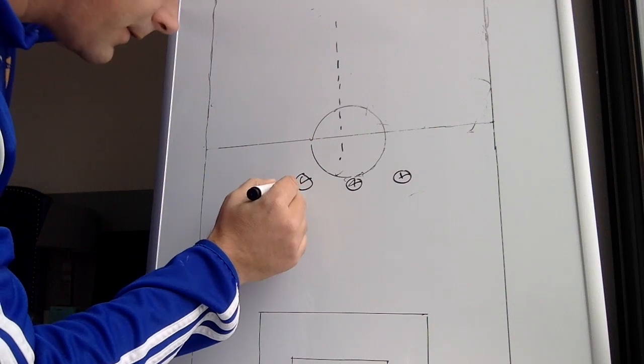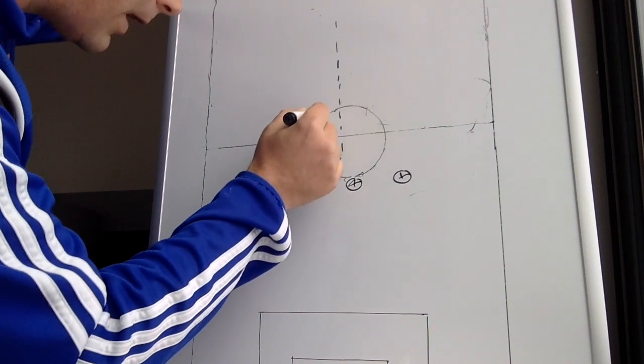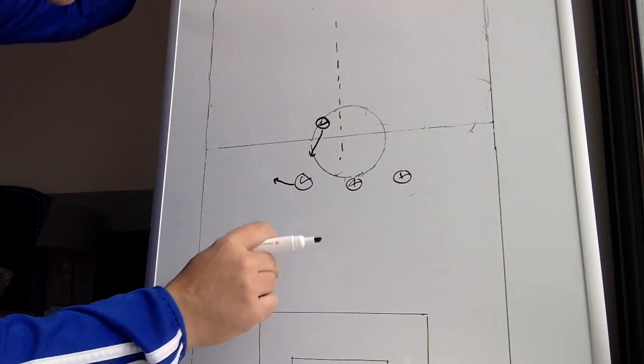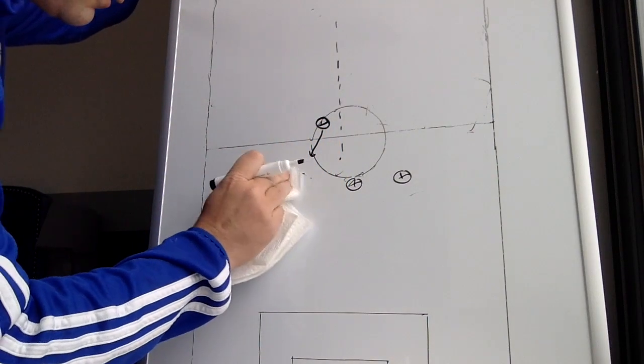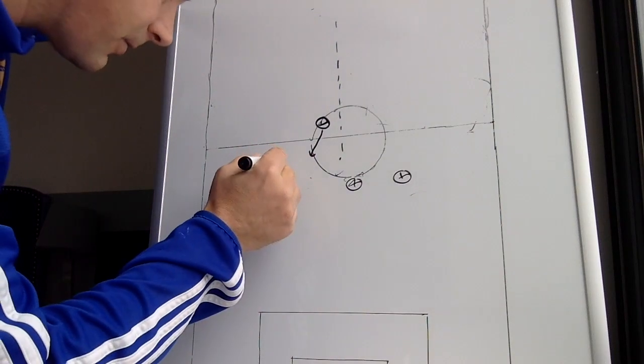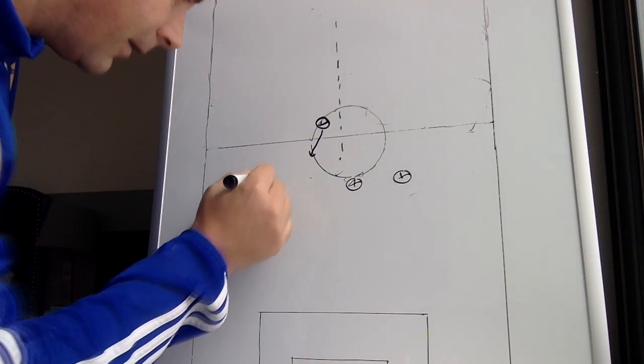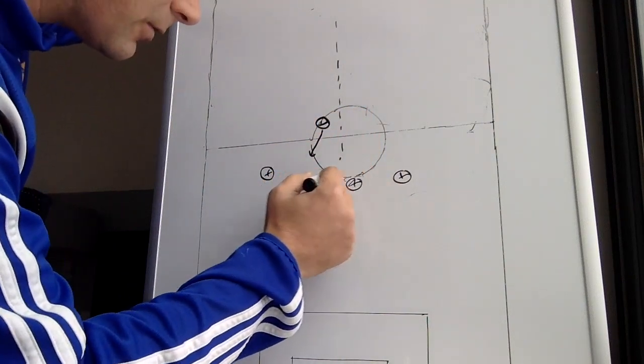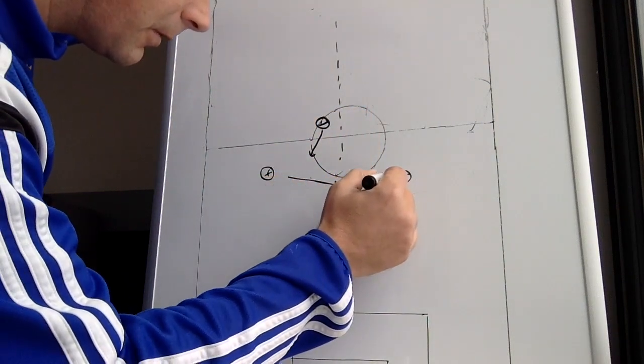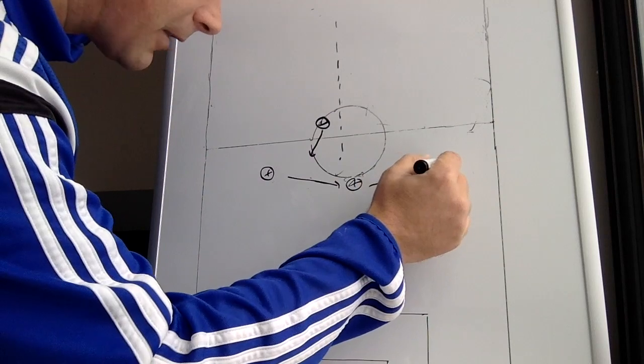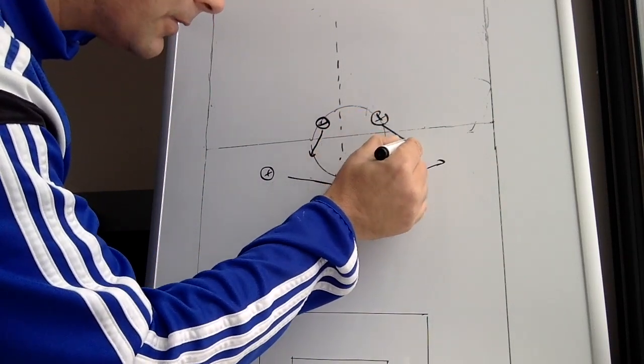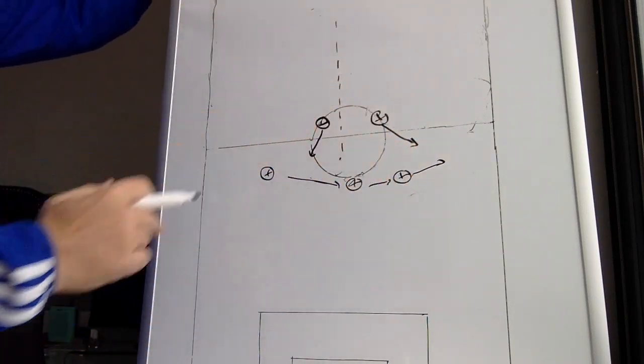So if this center back stretches a little wider, I like to have one of my defensive center mids, say that's my number six, come in there because now my left center back has come wide. As the ball gets switched from here to here, as this center back goes wider, I want my number eight. Again, this is a 3-5-2, to come in and work this side of the field.